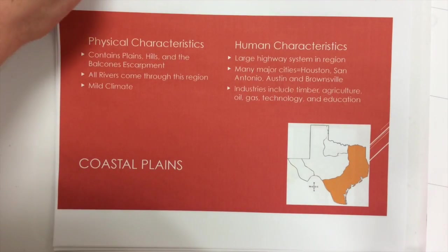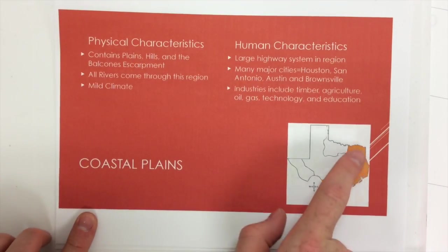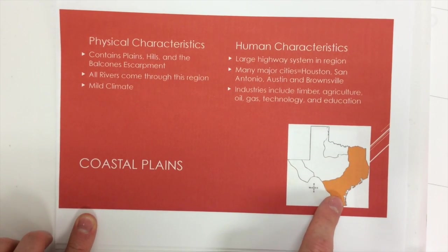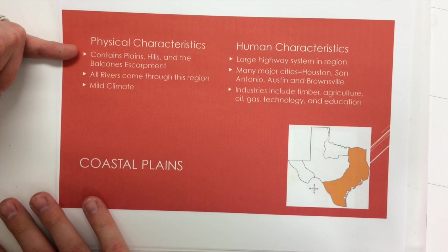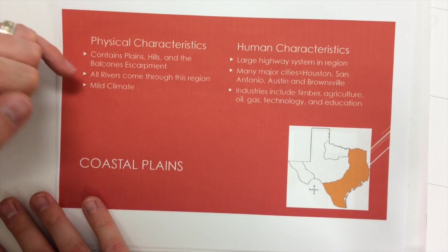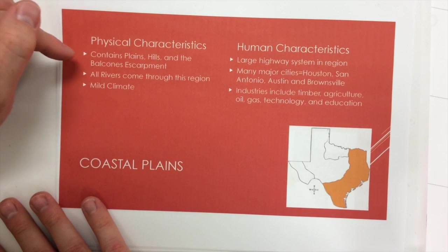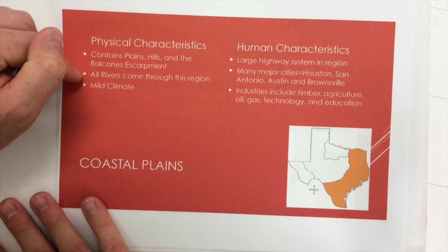The first region we're going to look at is the coastal plains. We'll want you to glue that piece down that looks like this. The physical characteristics of this area is it contains plains, hills, and the Balcones escarpment. We labeled all of that on our map.